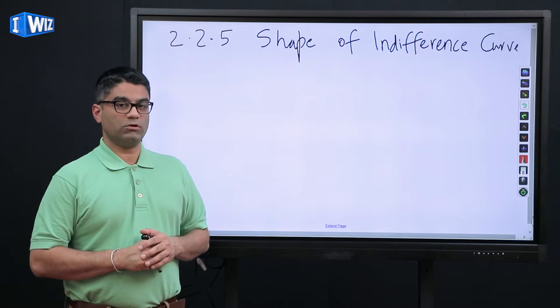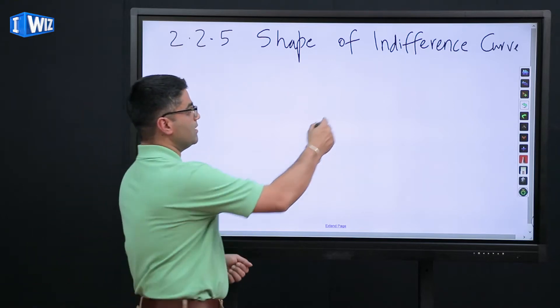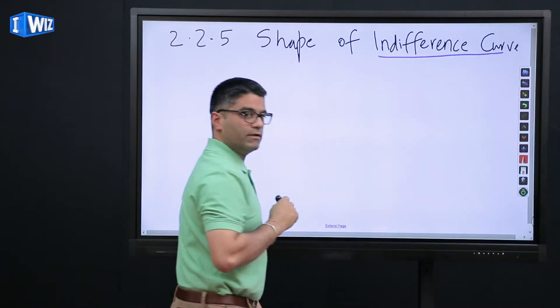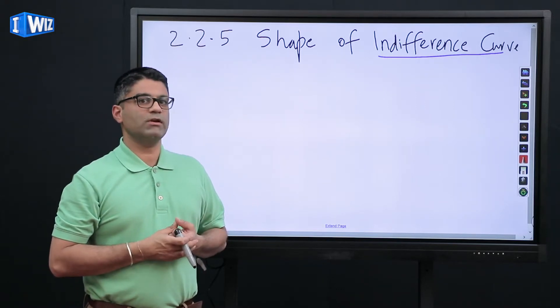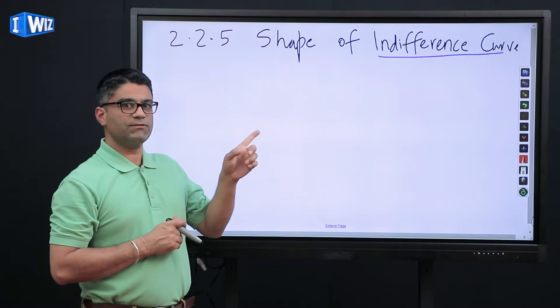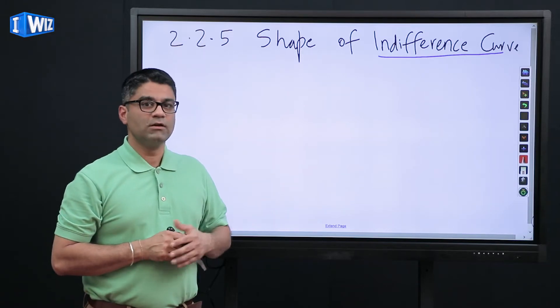Last time I told you what the shape looks like of the indifference curve. Again, make sure you remember an indifference curve is a curve that represents all possible bundles of goods x1 and x2 that's going to leave me equally happy.